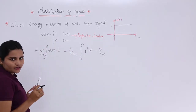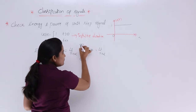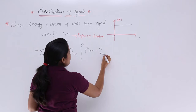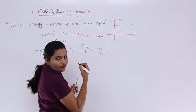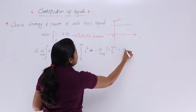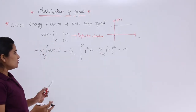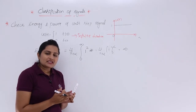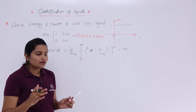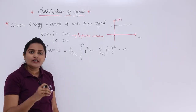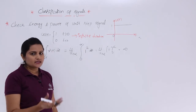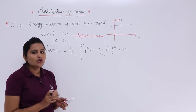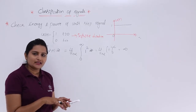If you consider a particular interval up to T, the integration of 1 gives t, and applying limits gives T − 0 = T. Taking the limit as T → ∞, you get infinity. So the energy of the unit step signal is infinity. This means it is not an energy signal, since an energy signal must have finite energy. Also, you cannot immediately call it a power signal — you must calculate power to determine whether it is a power signal or neither.